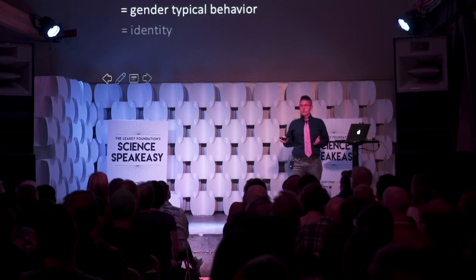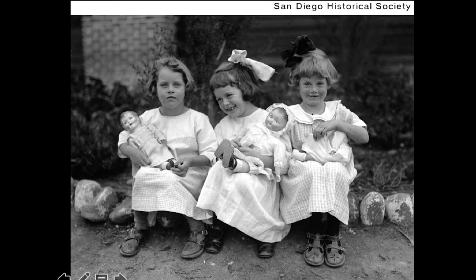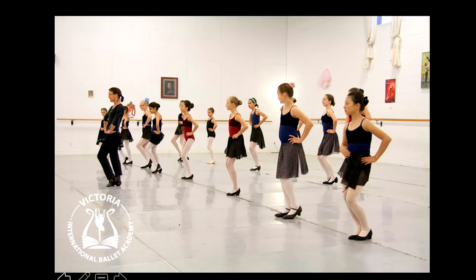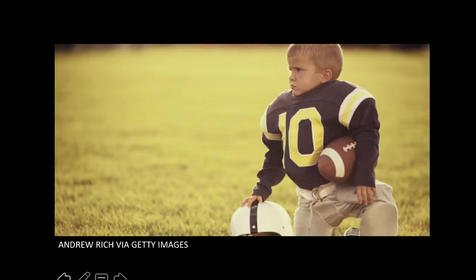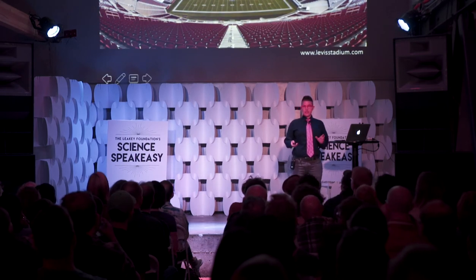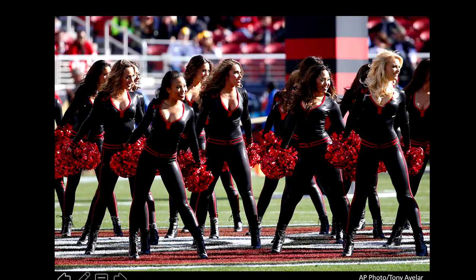Not every behavior humans exhibit is sex-typed, but there are a few we pretty reliably exhibit. Across many societies, it's more common for girls to play with dolls than boys. Across societies, kids who get into fist fights are more likely to be boys. In our society, kids who take dance lessons are more likely to be girls, and kids who take football are more likely to be boys. These gender differences persist through adulthood — at Levi's Stadium, women do synchronized dancing and men practice football.